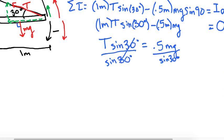So let me rewrite it one more time. T is equal to 0.5 or half of the weight of the board divided by the sine of 30 degrees.